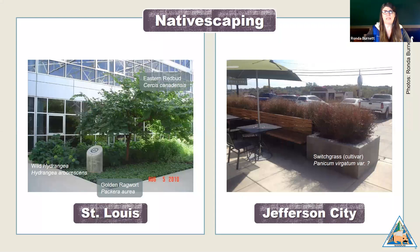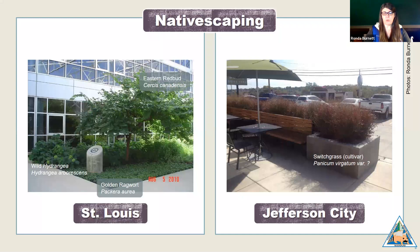The photo on the left is an entryway garden at a corporate headquarters in St. Louis, Missouri, combining golden ragwort as a ground cover with wild hydrangea and a redbud tree. On the right, there's an elevated bed surrounding an outdoor restaurant patio full of a monoculture of switchgrass — we can tell it is a cultivar because of the foliage color, much more red than the pure native. A designer might opt for a cultivar to feature a certain artistic element, such as creating a complementary color palette with the restaurant's colors.